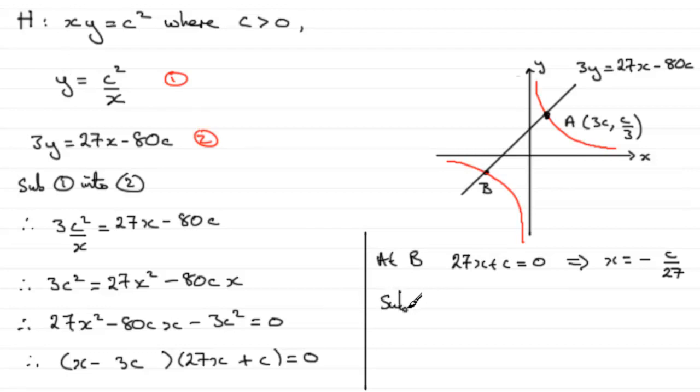So I'm going to sub that, sub into equation 1. And that gives us Y equals C squared, then divided by X, divided by minus C over 27. And that gives us, if we multiply top and bottom by 27 and also divide top and bottom by C, we end up with Y equaling minus 27C.